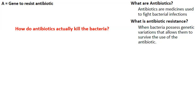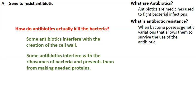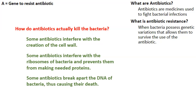So how do antibiotics kill bacteria? Some antibiotics interfere with the creation of the cell wall of the bacteria, causing it to die. Other antibiotics interfere with the ribosomes of the bacteria, preventing the bacteria from creating needed proteins, and therefore the bacteria die. And other antibiotics will actually break apart the DNA of the bacteria, thus causing the bacteria to die.